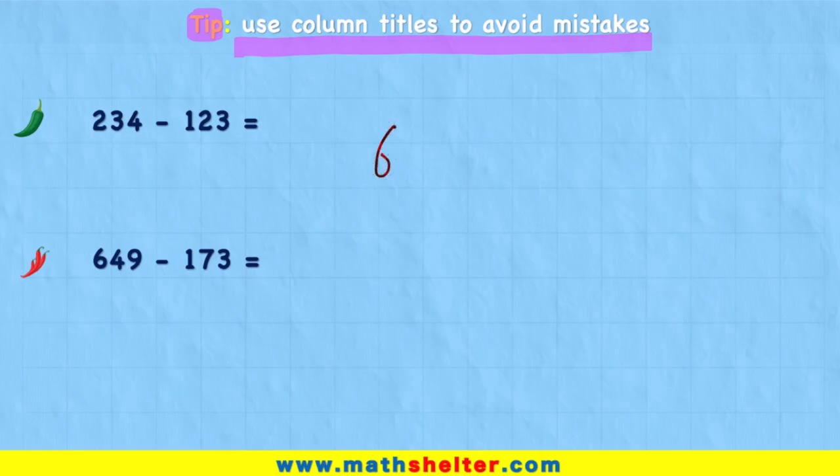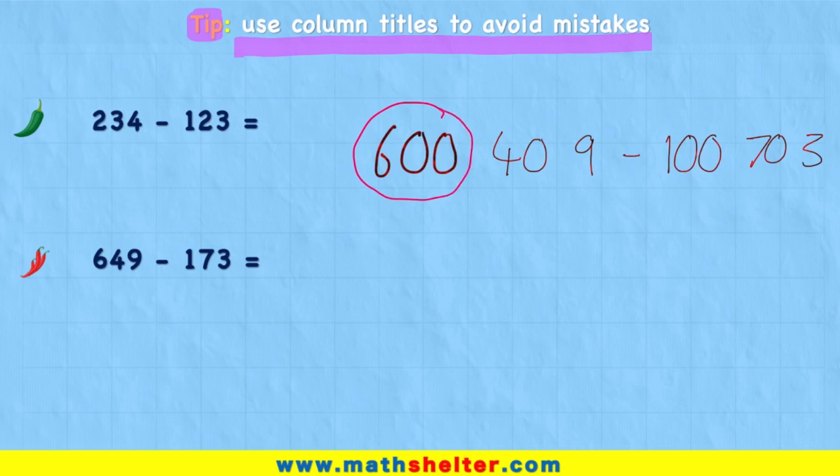If I have 649 and I subtract 173, then I can do exactly the same thing. I can look at my hundreds column and I can say, well I had 600, I've taken away 100, that leaves me with 500.